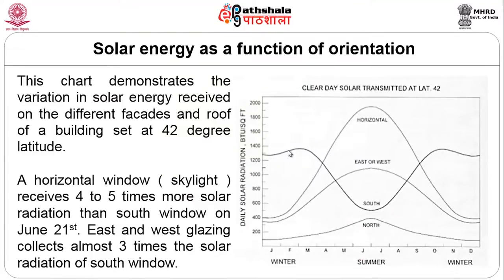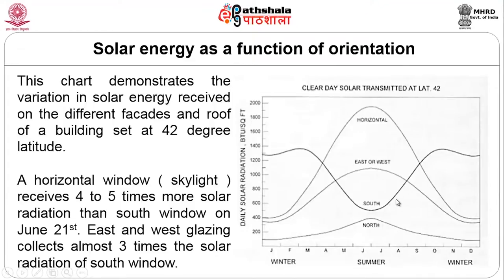Solar energy as a function of orientation: this chart demonstrates the variation in solar energy received on different facades and the roof of a building set at 42 degrees latitude. A horizontal window — essentially a skylight — receives 4 to 5 times more solar radiation than a south window on June 21st. East and west glazing collects about 3 times the solar radiation of a south window, while north is very low.